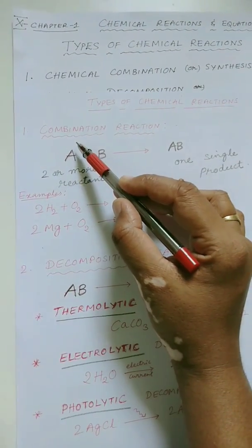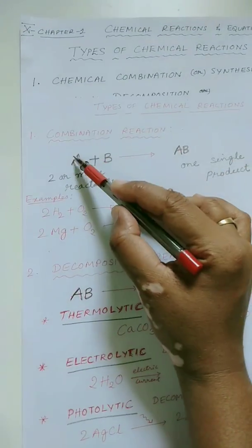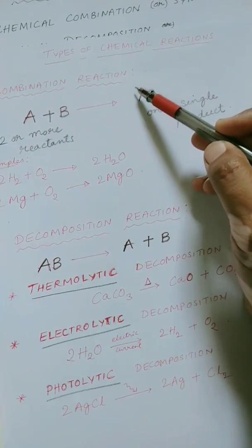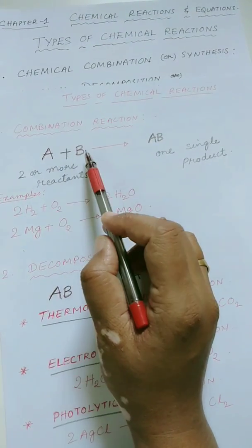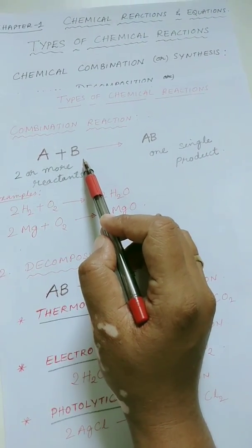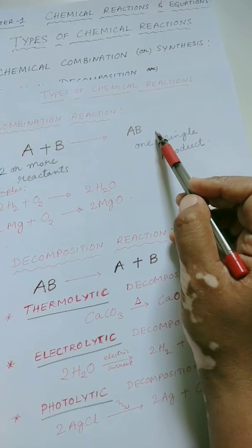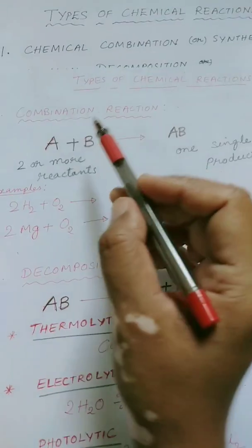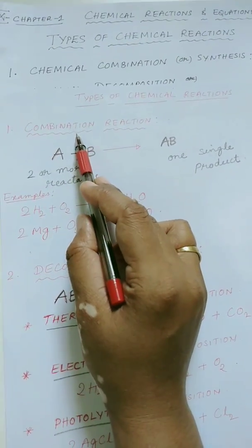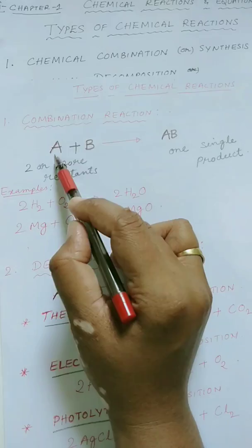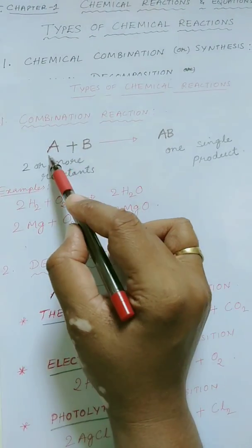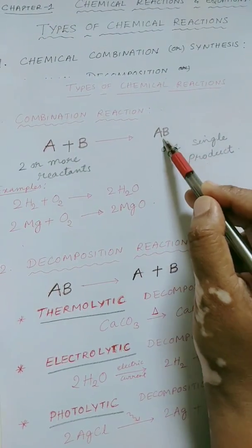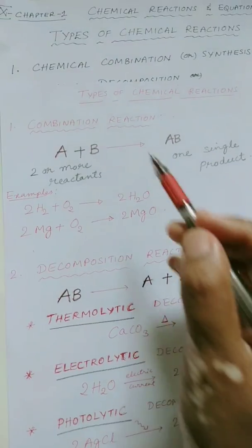The first one is a combination reaction — chemical combination reaction. In these types of reactions, two or more reactants or substances combine to form a single substance or a product. You can see over here, it's a general equation for a combination reaction. Any two or more substances combine to form a single product or a single substance.